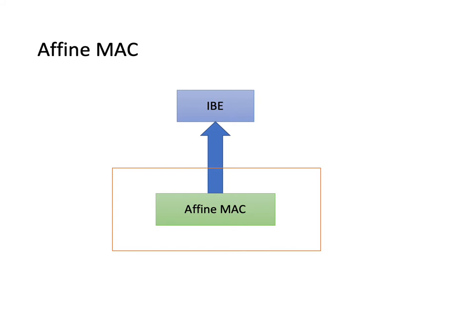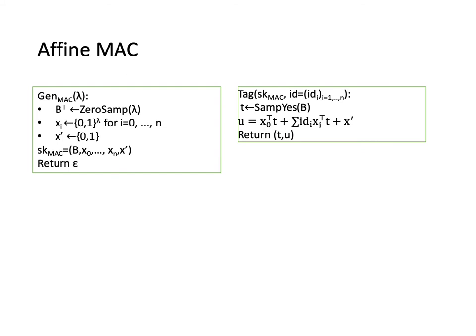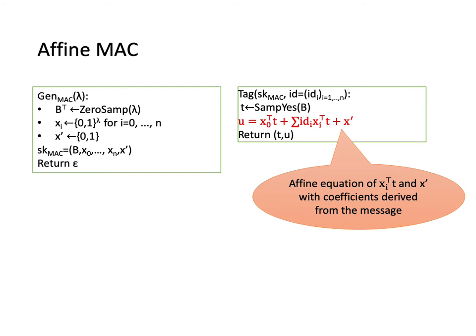Next, I will give the construction of our affine MAC. The construction of our affine MAC is similar to the one in the BKP construction. The secret key consists of a matrix B whose transposition Bᵀ was sampled from 0-SAMP, a sequence of random vectors x₀ to xₙ and random bit x'. The tag consists of two parts T and U. T is a vector sampled from the span of B. And U is computed by an affine equation of xᵢᵀT and x' with coefficients derived from the message, which is denoted by id here.